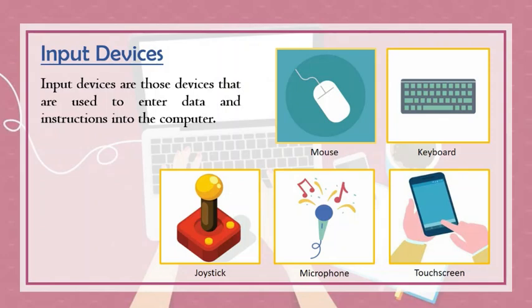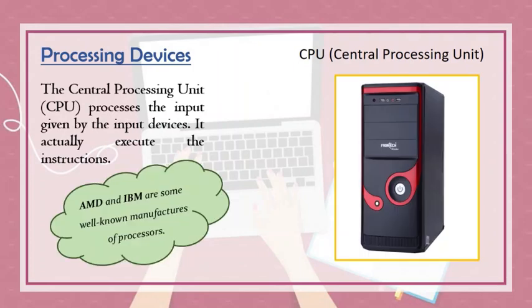Touch screen — tablet computers and smartphones have touch screens which act both as input and output devices. Next are processing devices. The central processing unit, that is CPU, processes the input given by the input devices. It actually executes the instructions. Whatever is typed through the keyboard or done with the mouse goes to the CPU, which processes it and sends the result to the monitor.